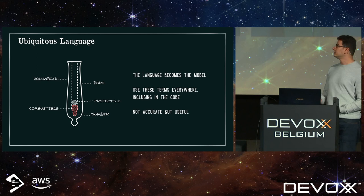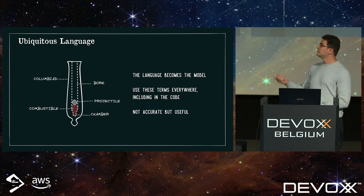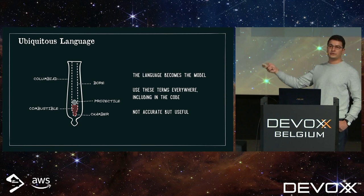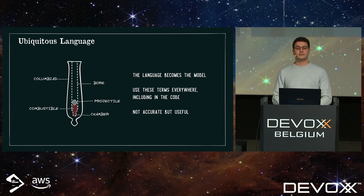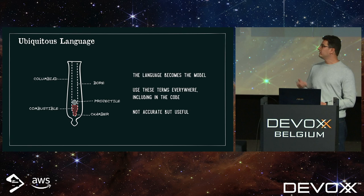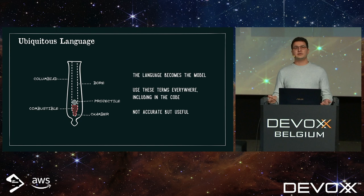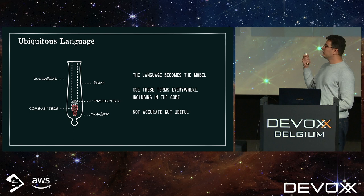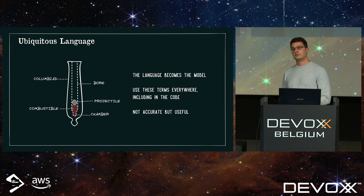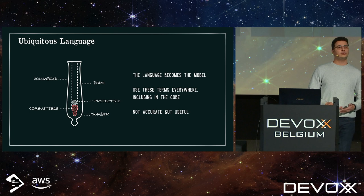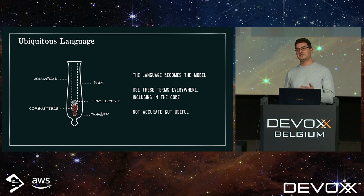It's worth noting that this model is highly simplified. If you give this schema to a gunner and ask him to operate a columbiad, he will not be able to do so. But our problem is computing the amount of combustible needed to eject our projectile — we don't care about stabilization systems. We don't want a model that is accurate; we want something useful for the problem at hand. Accurate is complex and difficult to implement. Useful can be simple and pragmatic.